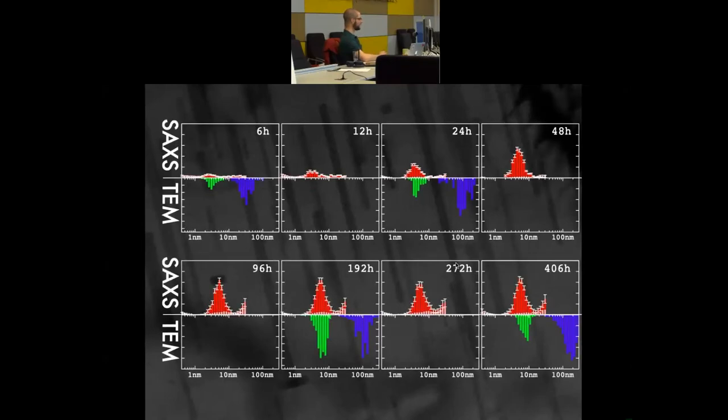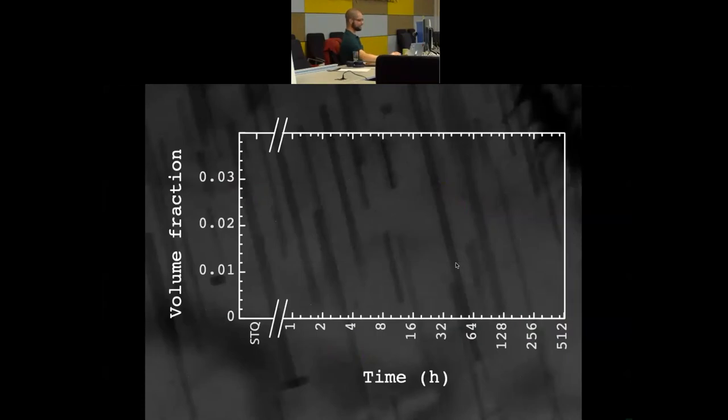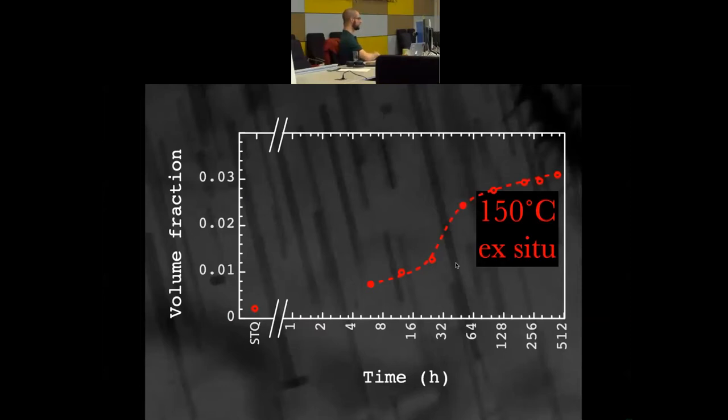So, from small angle x-ray scattering, those size distributions are shown in red. From electron microscopy, my colleague painstakingly measured 500 precipitates for each one of these ageing times. And you can see that those two actually match quite easily. However, his average was over 500 precipitates, our average was over billions and billions of precipitates. So, together, these two techniques actually work super nicely. We could also get information on the volume fraction of precipitates, since we measure an absolute unit, and we could follow the growth of these precipitates based on the ageing time.